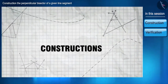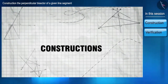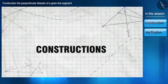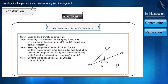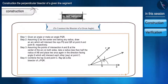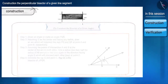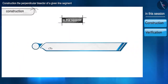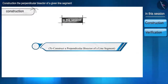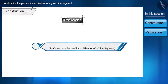Welcome to this session on constructions. In the previous session, we learned how to construct the bisector of a given angle and also gave proof that the construction we made is right. In this session, we will learn to construct a perpendicular bisector of a line segment and will prove that the construction is correct.